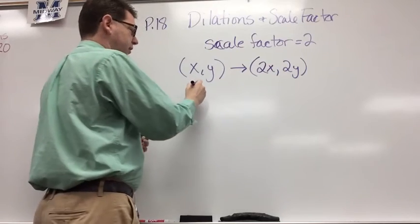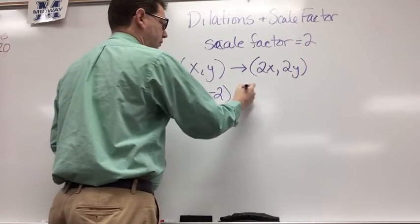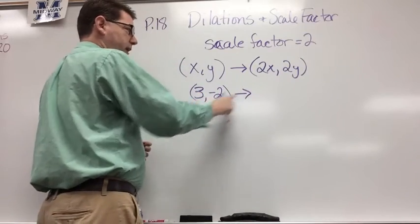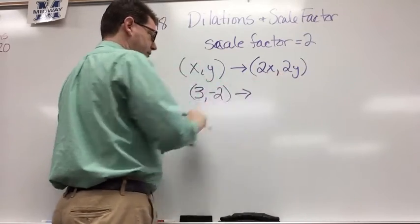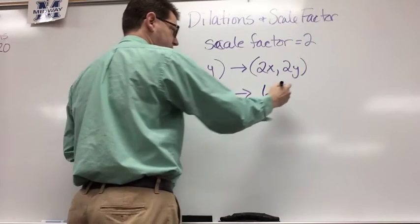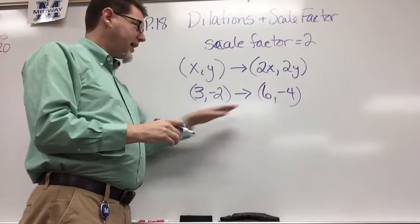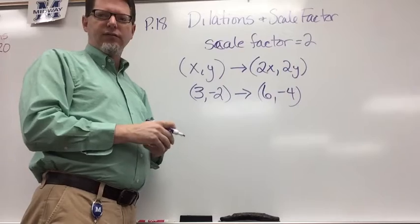For example, if I had the point (3, -2), then I would multiply both by 2 because that's what my scale factor tells me to do. We know that 3 times 2 is 6 and -2 times 2 is -4. So that would be my new point, dilated by a scale factor of 2.